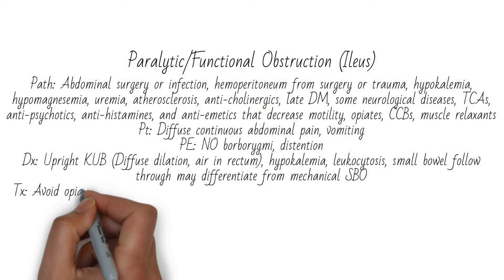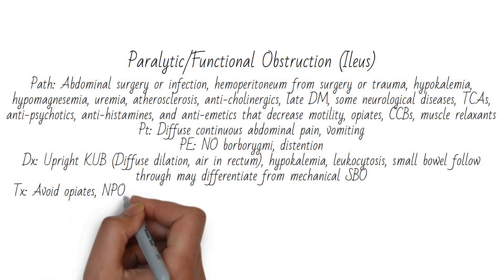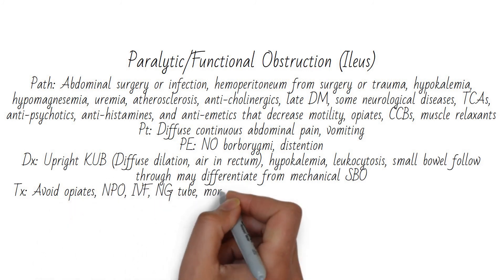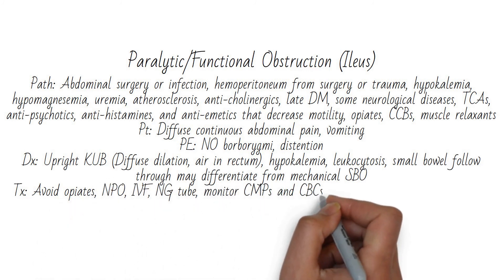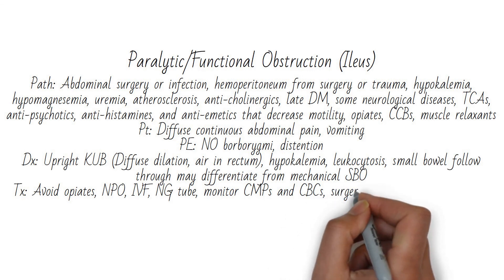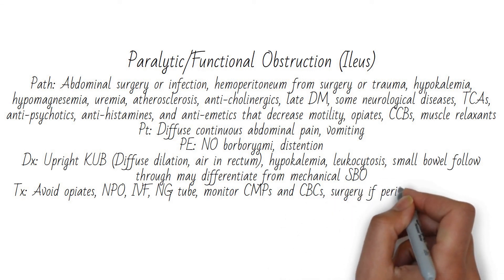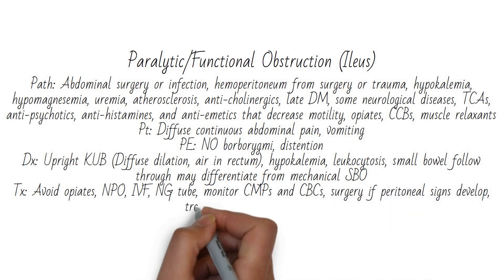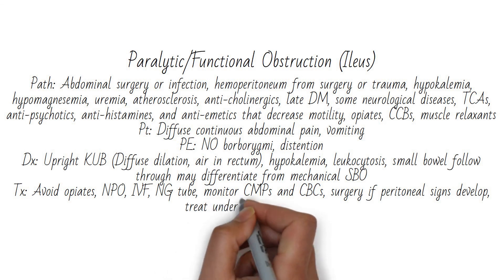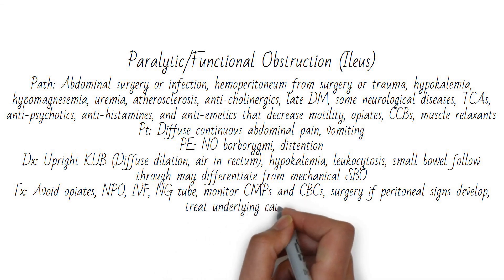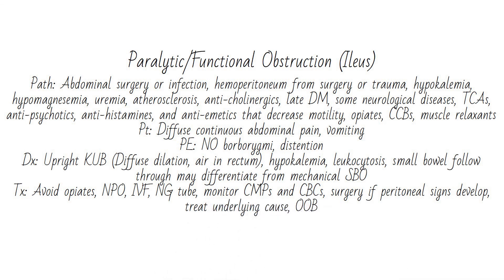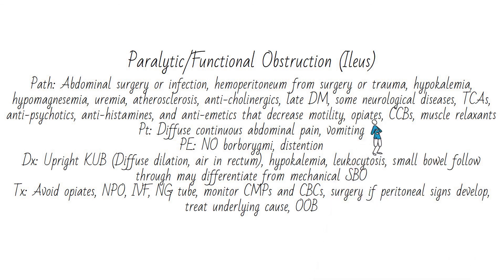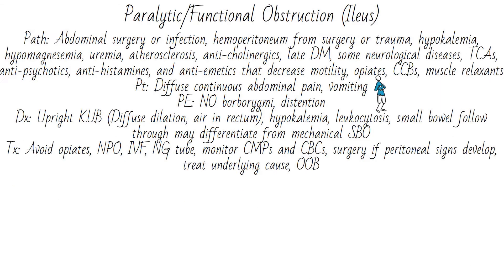To treat ileus: avoid opiates, make the patient NPO, give IV fluids, decompress with an NG tube and low intermittent suction. Monitor CMPs and CBCs, and go to surgery if peritoneal signs develop. Most importantly, treat the underlying cause and get the patient up and out of bed.